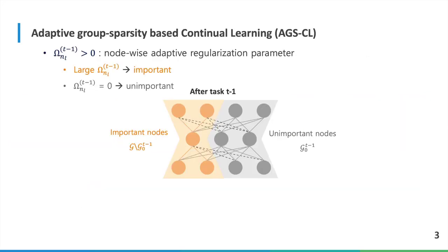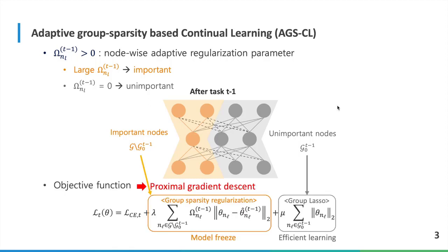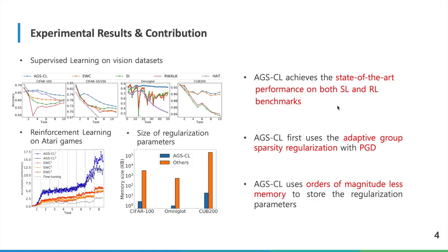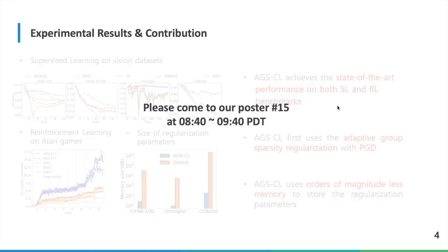We propose a novel method, AJCL. AJCL makes adaptive regularization parameters to measure the importance of nodes and separate the nodes based on their importance. AJCL applies group sparse penalty to important nodes for model-freeze, and group lasso to unimportant nodes for efficient learning. Proximal gradient descent is used to achieve exact sparsity and freezing. AJCL achieves state-of-the-art performance, first uses adaptive group sparse regularization with PGD, and uses less memory. Thank you for listening, and please come to our poster number 15 at 8:40.